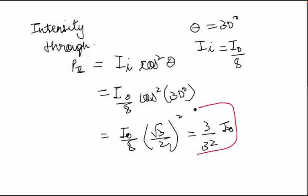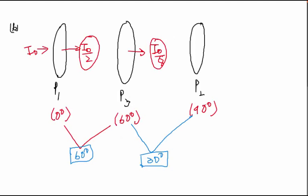This will become 3 by 32, 3 I0 by 32. So this will be the intensity through P2.